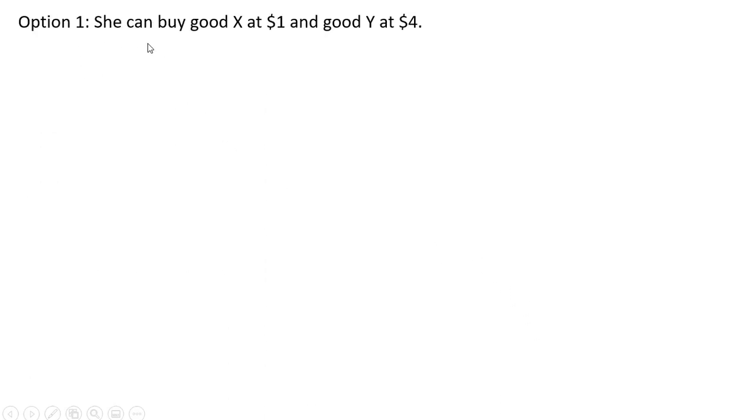All right, so let's look at option one. She can buy Good X at $1 and Good Y at $4. Let's plug those prices into our indirect utility function. Utility will equal 2.5 times her income.